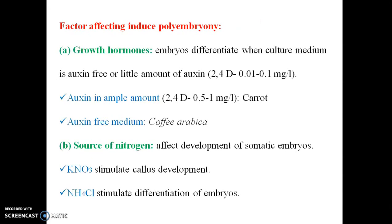Factors affecting induced polyembryony: growth hormones and source of nitrogen are most important. The growth hormone auxin helps with differentiation. Its concentration is 0.01 to 0.1 mg per liter. Kinetin amount is 0.5 to 1 mg per liter. Without sufficient oxygen, like in Coffea arabica, differentiation is limited. Regarding nitrogen source: KNO3 and KH2PO4 help development, while NH4 ions stimulate differentiation of embryos.